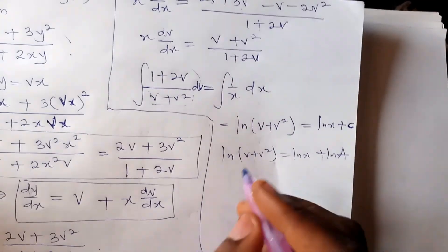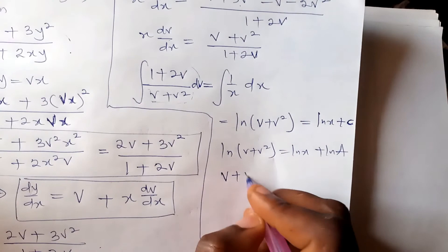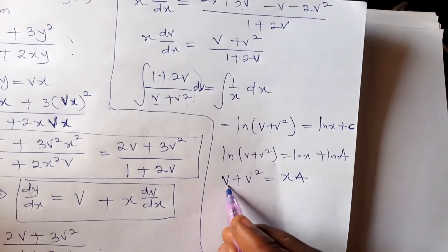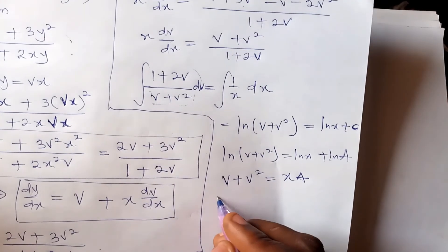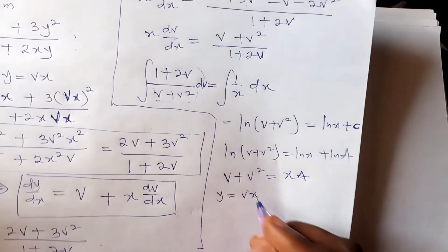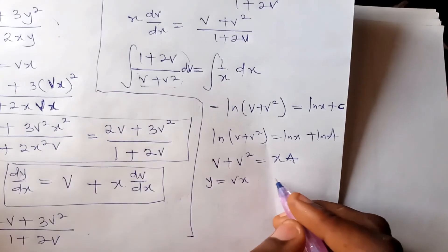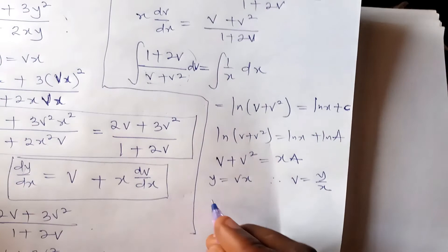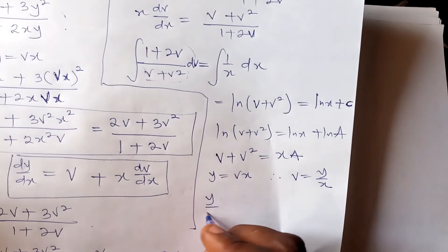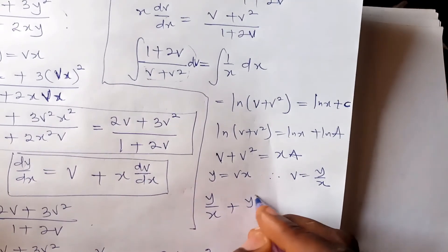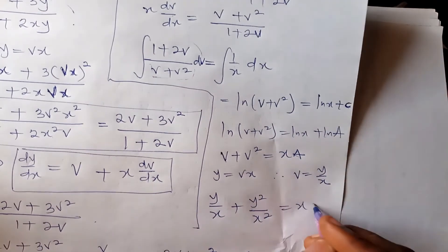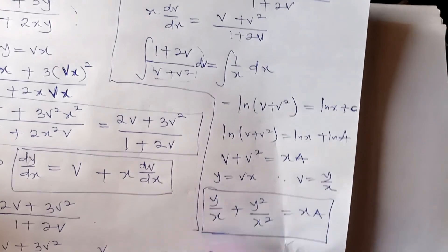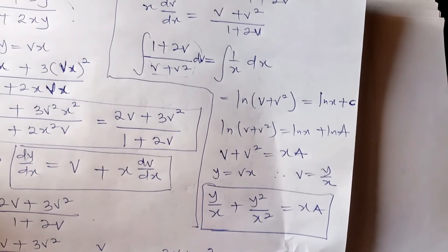So the solution is ln(v + v²) equals ln(x) plus ln(a). Taking the exponential of both sides gives v + v² equals xa. Since we want y not v, and v equals y/x, substituting back gives y/x + y²/x² equals xa. This is the solution, which can be further simplified as desired.